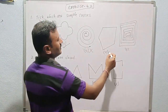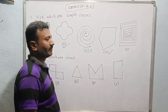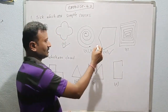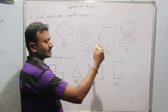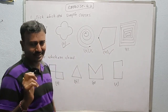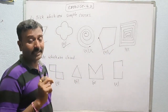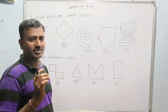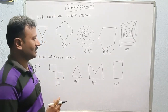We can tick the fourth figure because whenever we start from any point, it does not intersect anywhere except at the end points. At the end points only it should intersect.